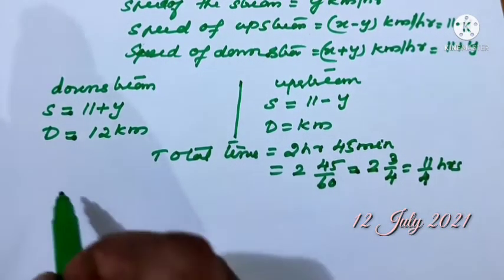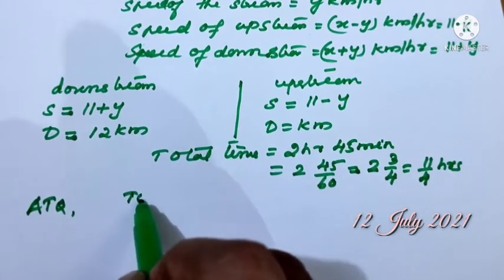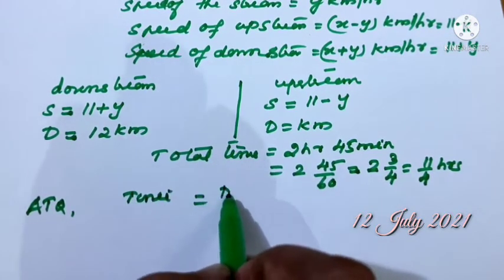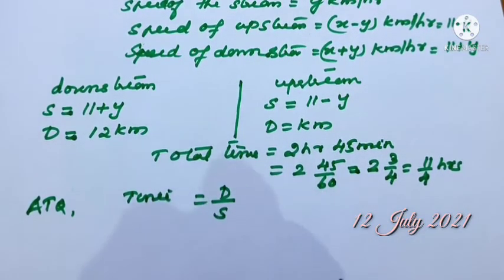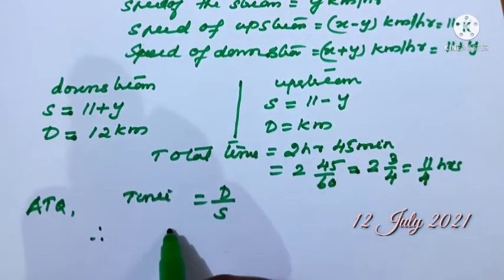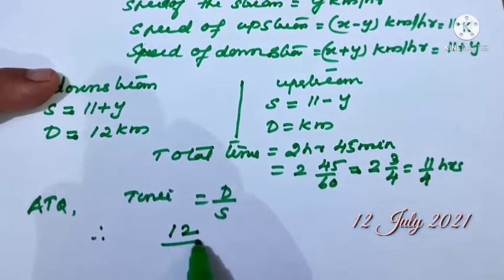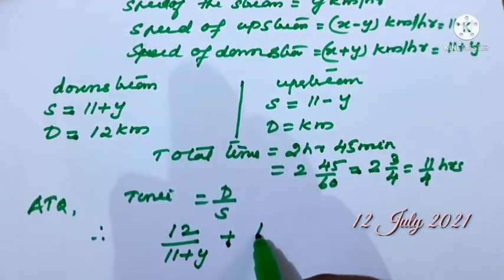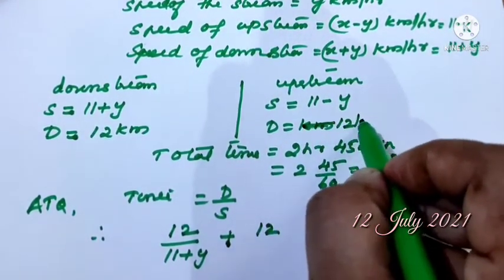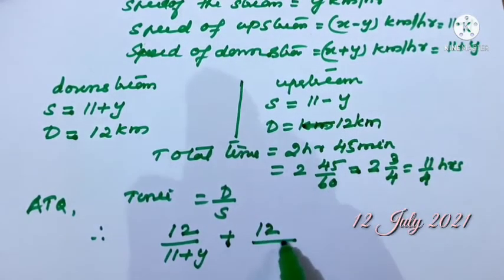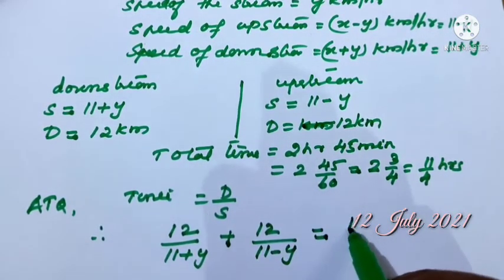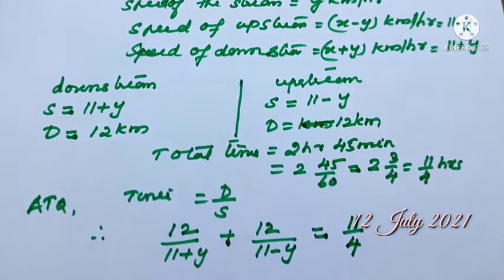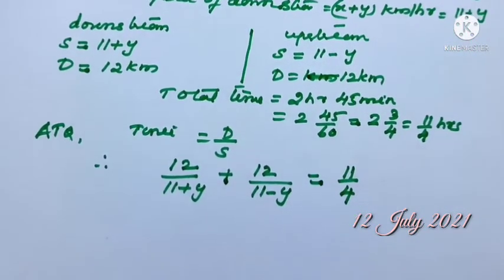According to the question, time equals distance divided by speed. Therefore we can write: distance 12 divided by 11 plus y for downstream, plus 12 divided by 11 minus y for upstream, equals total time 11 by 4. So our equation is: 12 by (11 plus y) plus 12 by (11 minus y) equals 11 by 4.